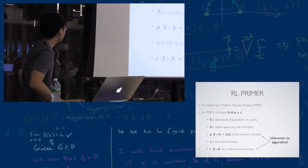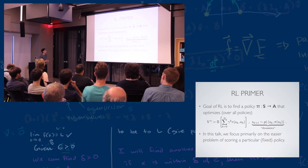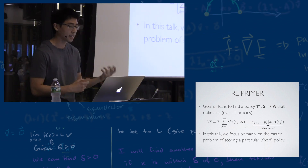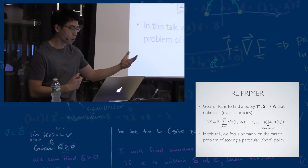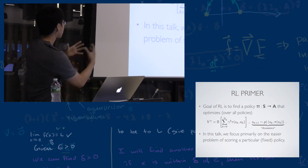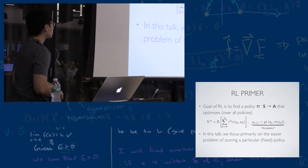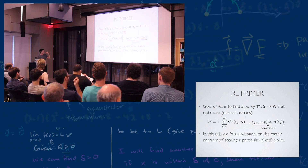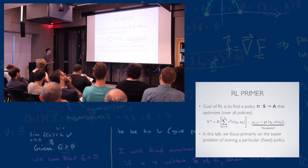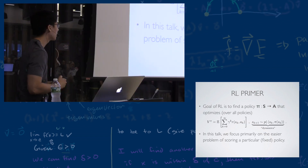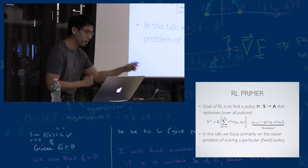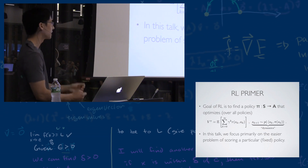The goal of RL is to find a policy pi — a function that maps states to actions. Given the current board configuration, you propose an action: that's a policy. The goal is to find a policy that maximizes expected reward over time. This value function V-pi represents the expected reward in the infinite horizon, with a discount factor gamma to the K that exponentially discounts future rewards relative to the present.